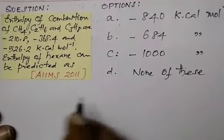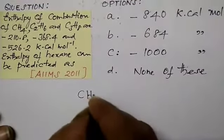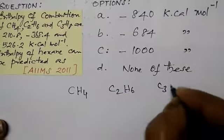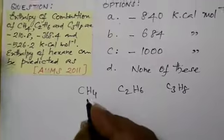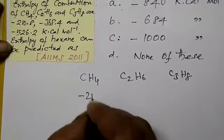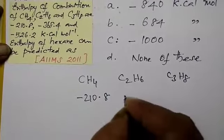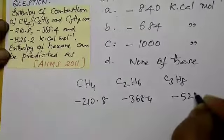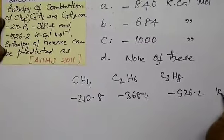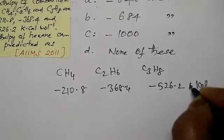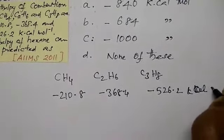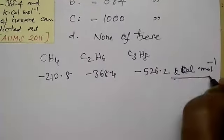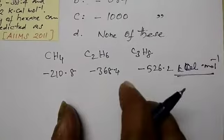Now let me write first the datas. Methane. Whenever any work you are doing, there should be some order. So, I am taking the corresponding values for the datas for calculation. Methane minus 210.8, ethane minus 368.4, propane is minus 526.2. All are having the values of kilocalories per mole. The unit is common for everything. Given data is there.